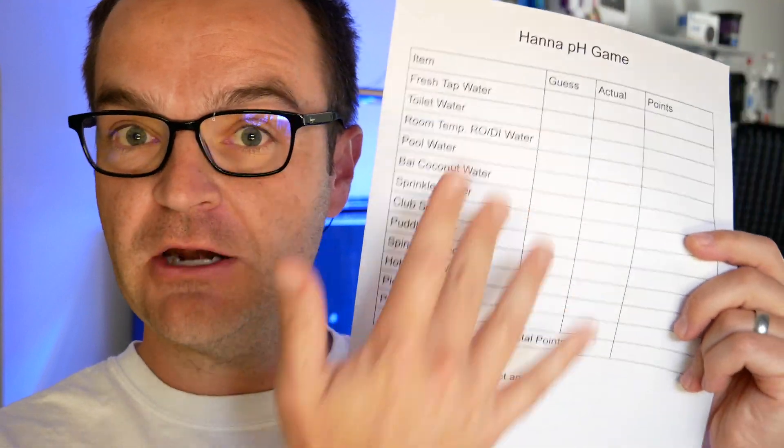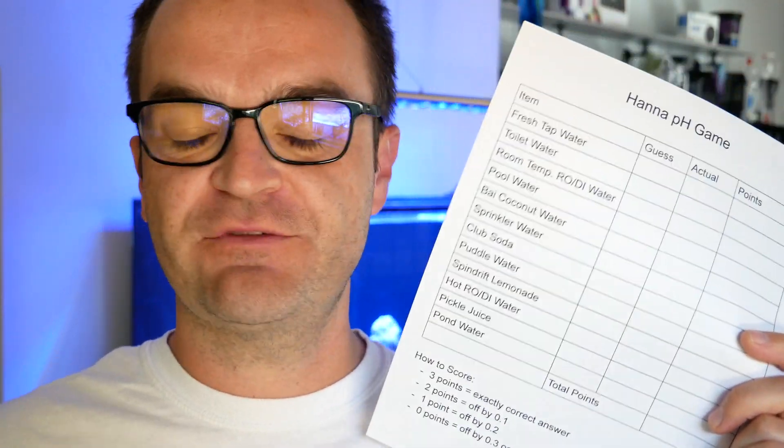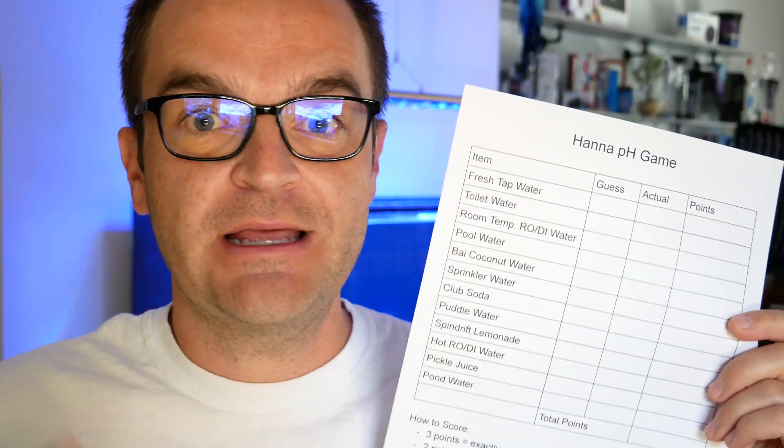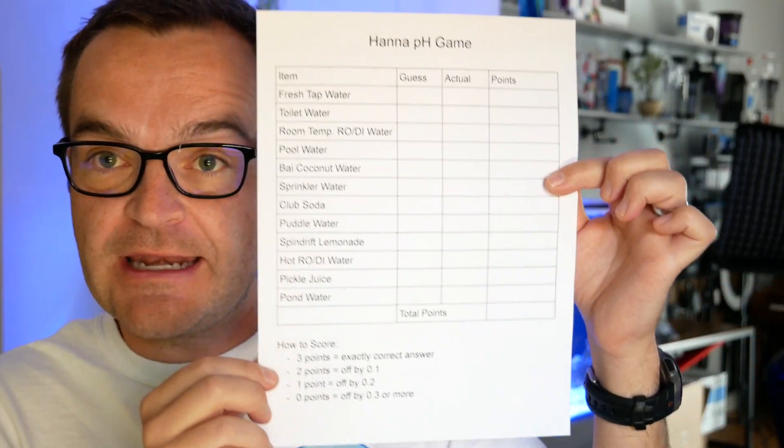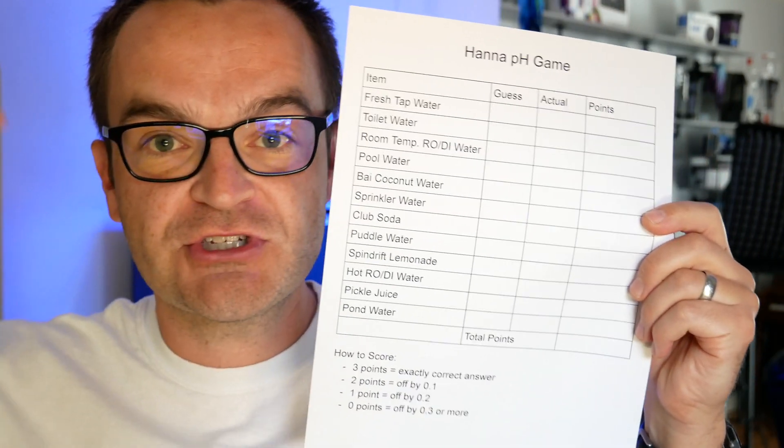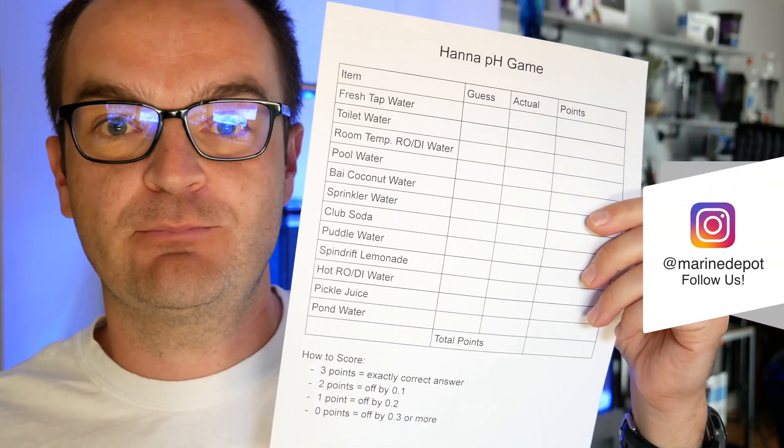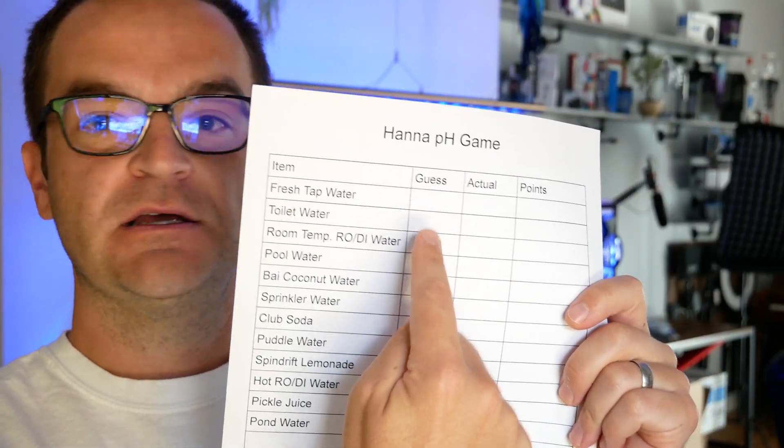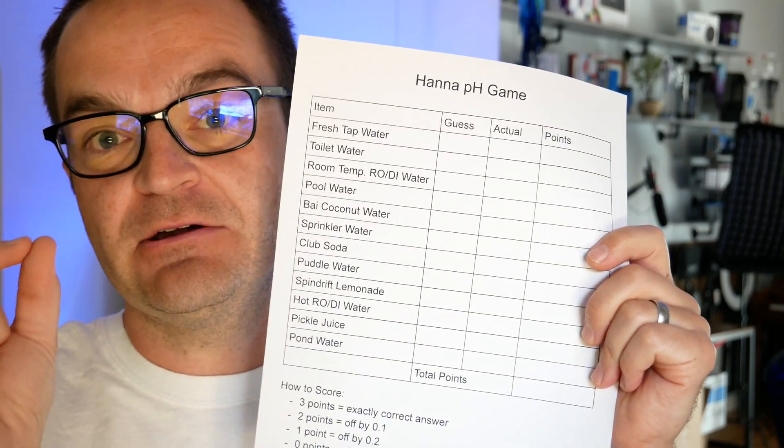And then in between the hourly tests, we're going to play a little game. So I've compiled a list of things from around the house, from around the neighborhood. Here's how you can play along. You can just pause this video right now, take a screenshot and print out this game board, or you can just go to my blog below and I'll put a PDF version that you can print out. And you are going to guess in this column here to the nearest tenth.